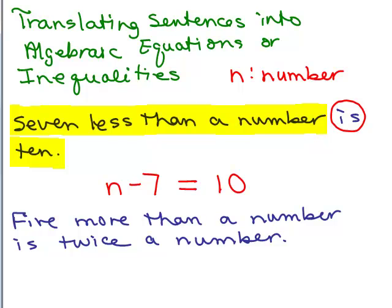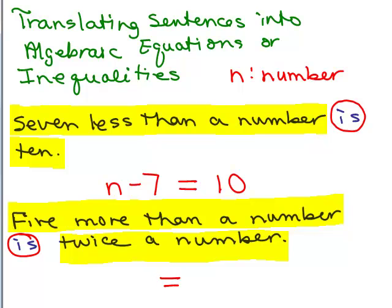Why don't you try this one on your own by putting the video on pause and seeing if you could figure it out. Okay, again, we're going to see that we've got that word 'is' there. Five more than a number is, there's your equal, is twice a number. That breaks up the left side of the equation with the right side of the equation. So we've got the word 'is', that's going to be our equals, so we've got five more than a number.